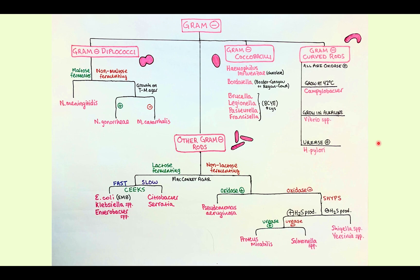This is our algorithm, and we're going to come back to it again and again. It's large, but as we go through our gram-negative diplococci, coccobacilli, and so forth, I'll blow each section up so you can see the basic facts — just like I did with the gram-positive algorithm. I can't put everything on here because there's so much information, but it helps to have a general idea: it stains pink, now what's the shape of the bacteria, and then from there there are different things to know. For gram-negative diplococci, for example, you need to know if it's a maltose fermenter or not, and does it grow on Thayer-Martin agar.